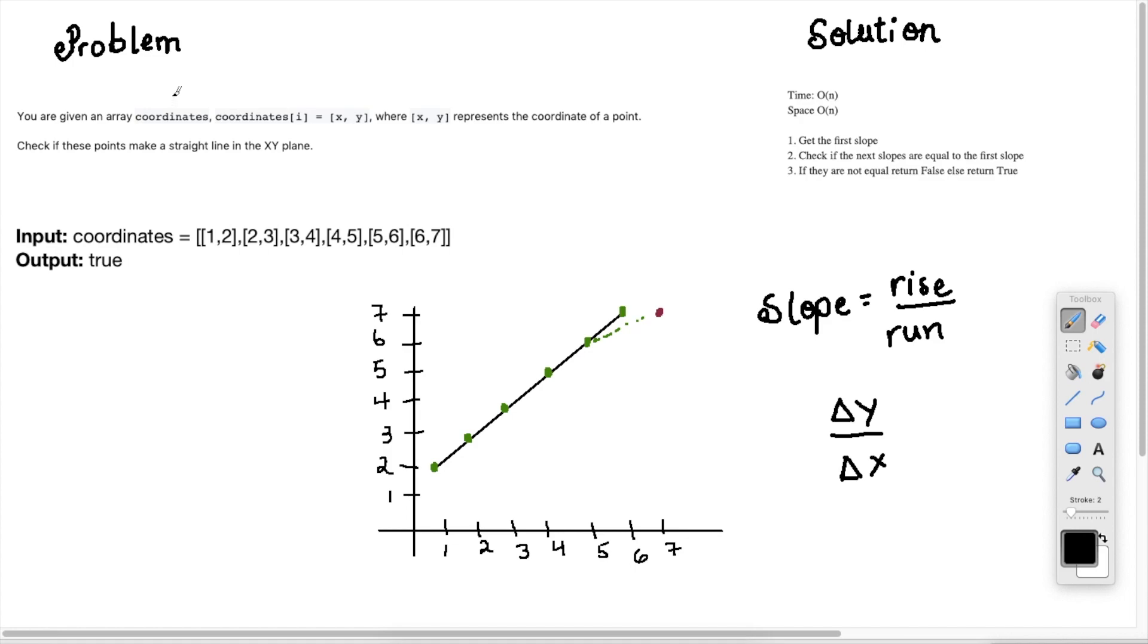You're given an array coordinates with coordinate i equals x, y, where x, y represents the coordinate of a point. Check if these points make a straight line in the x, y plane. So what the question is basically saying is that we're given a coordinates 2D matrix, and in this matrix the first position is the x coordinate and the second position is the y coordinate.